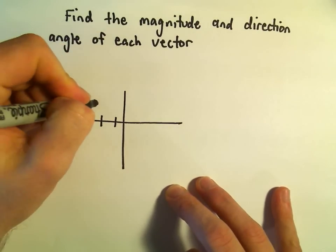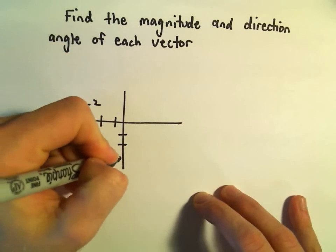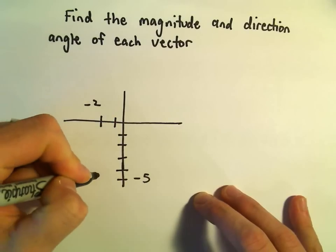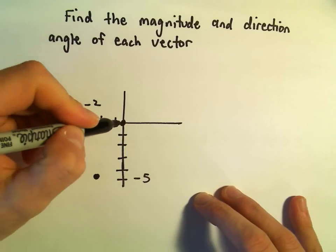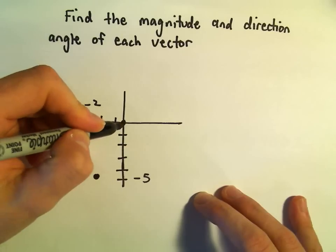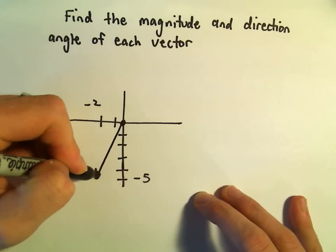Negative 1, negative 2, negative 1, 2, 3, 4, 5. If the vector starts at the origin, you go 2 units to the left and then you would go 5 units down is where it would stop.